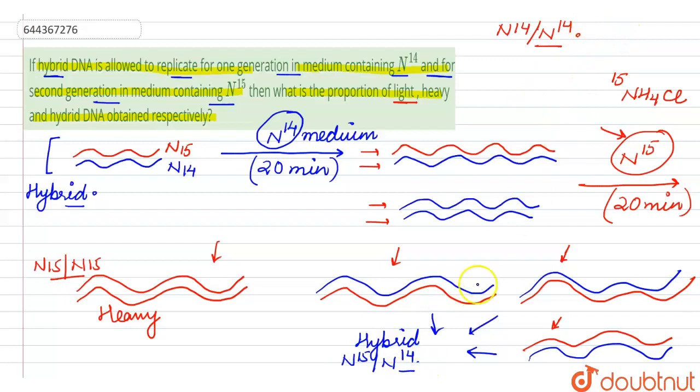So N14 by N14, N15 by N15, and N14 by N15. Let's find out the ratio. N15 by N15 is one, N14 by N15 is three. So what is the ratio? It is zero is to one is to three. So this is the right answer for this question.